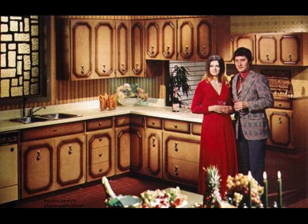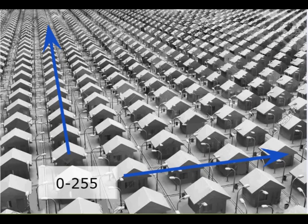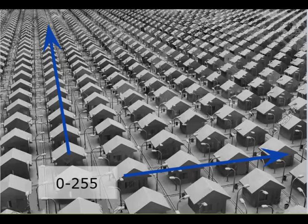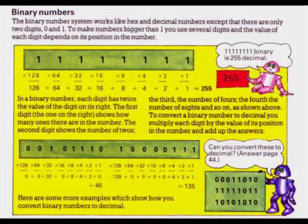We'll be looking more closely at the Spectrum memory layout in a future episode, but what's important to remember now is this street-and-house style of referencing, because it allows us to work with 16-bit addresses using two individual 8-bit numbers — which is just how the Z80 likes to work, making it all the more efficient.